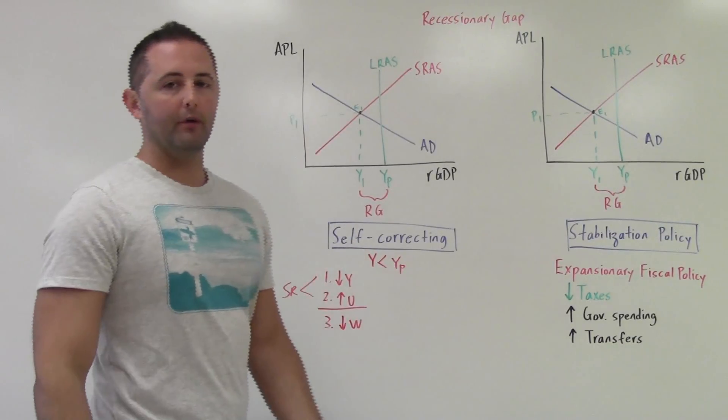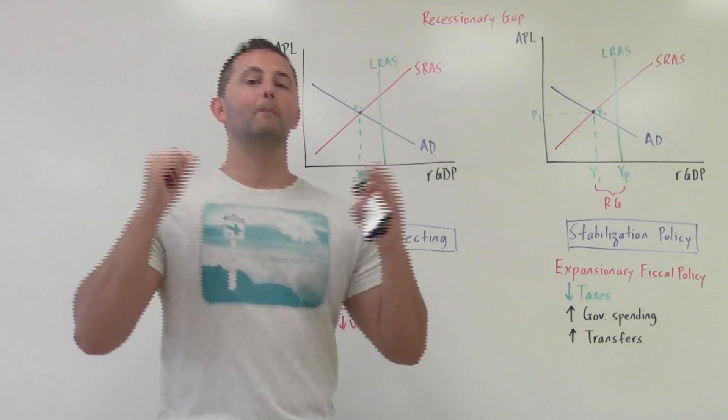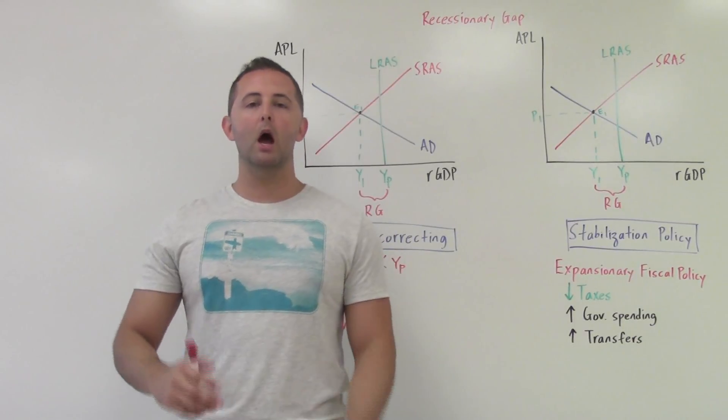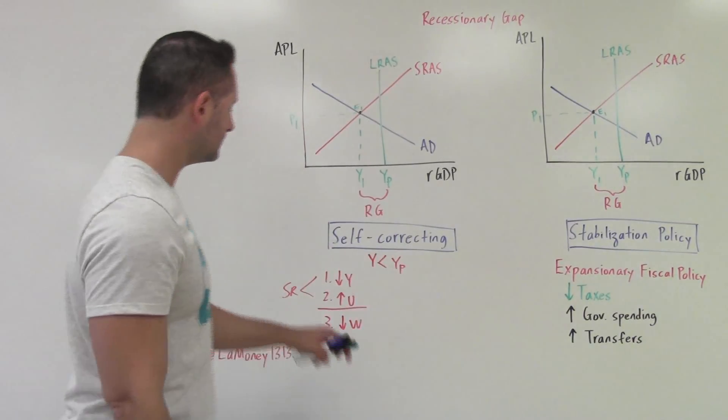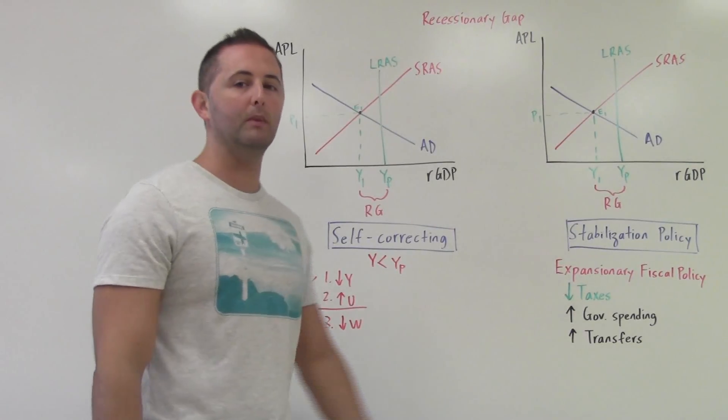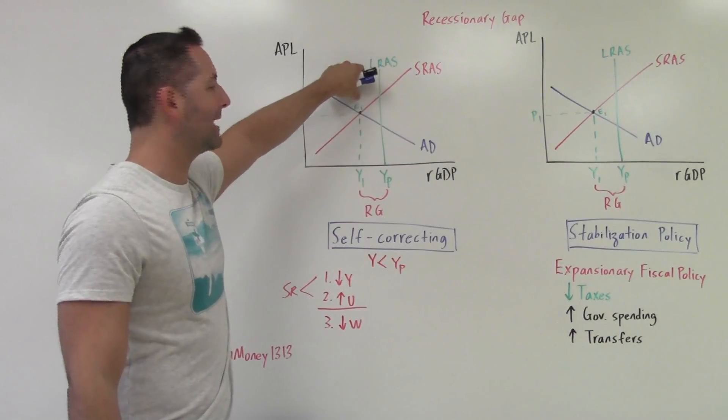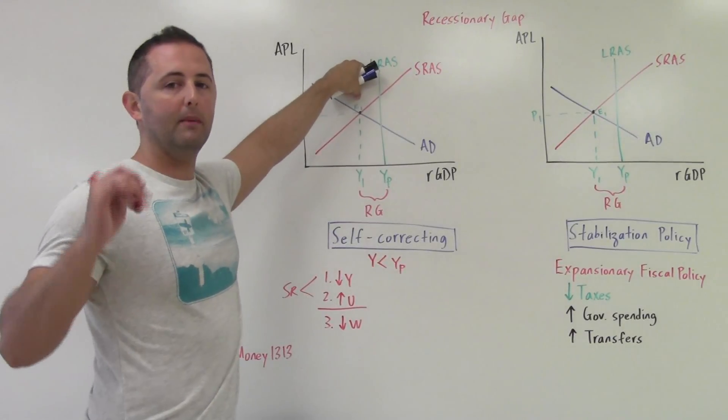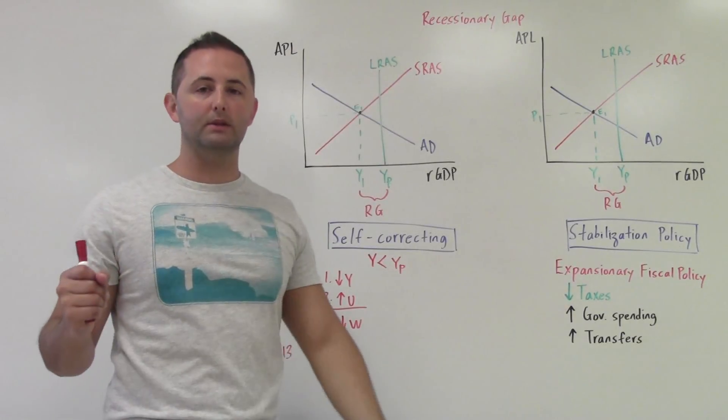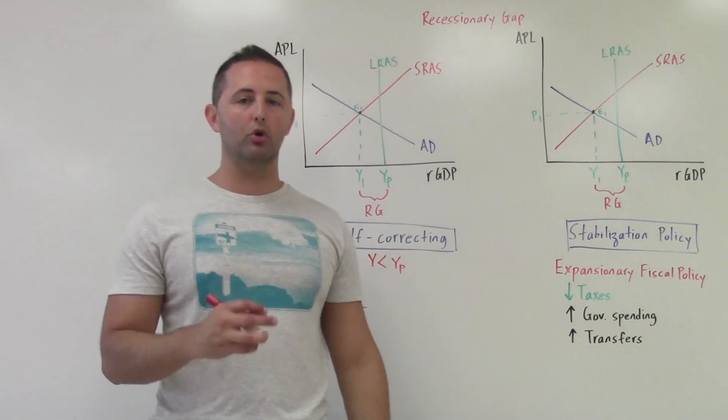However, that does not happen immediately. The reason for that is sticky wages. Wages and prices are slow to fall in the face of high unemployment. That's what sticky wages are. In the short run, the way that we are able to operate at E1, and the reason the economy doesn't automatically self-correct and bring us back to the LRAS curve, is because wages are sticky in the short run.